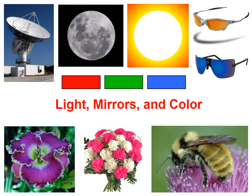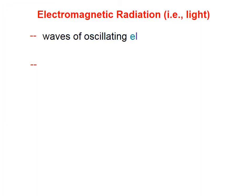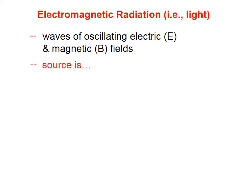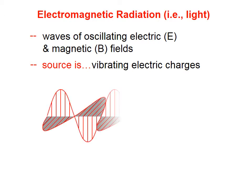This is our first lesson in our unit on light, mirrors, and color. Electromagnetic radiation is a fancy term for light. Light consists of waves of oscillating electric and magnetic fields. We abbreviate an electric field with a capital E, and a magnetic field, for some reason, with a capital B.